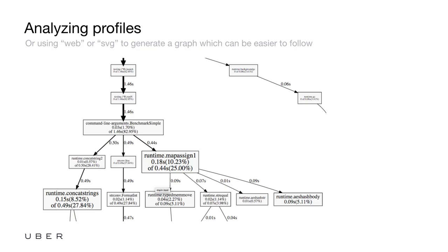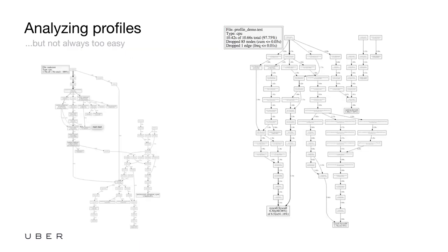The SVG view shows you the call graph — the arrows show what's calling what, and the size of the box shows how much time is spent inside that function. It's a pretty great view for where time is being spent, but as your programs get bigger, so do your PPROF graphs. It can get a little bit tricky to find out what's happening when it's this complicated.